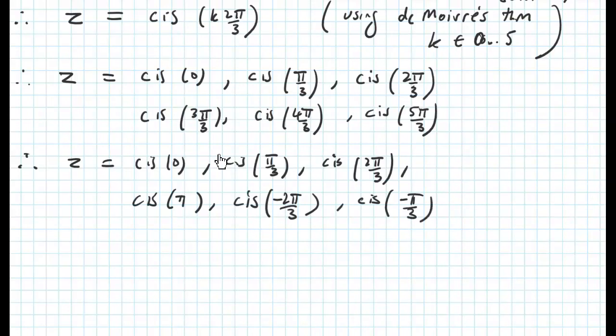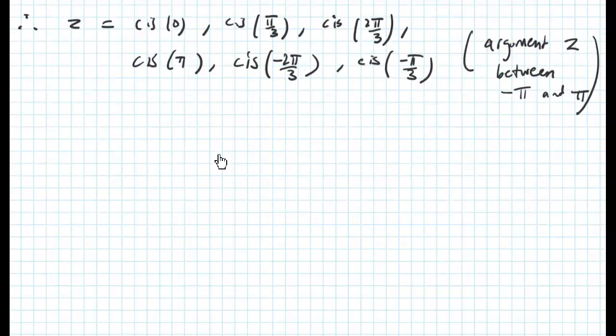We notice here that cis 4 pi on 3 becomes cis negative 2 pi on 3. We're doing this because we want an argument of z to be between minus pi and pi.